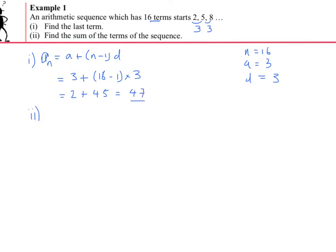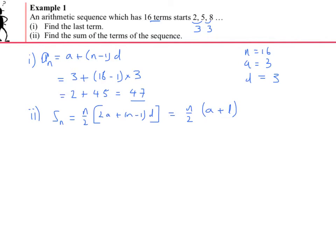For the second part, find the sum of the sequence. We now know the last term is 47, so we can use Sn = N/2 × (A + L). That gives S₁₆ = 16/2 × (2 + 47) = 8 × 49 = 392.